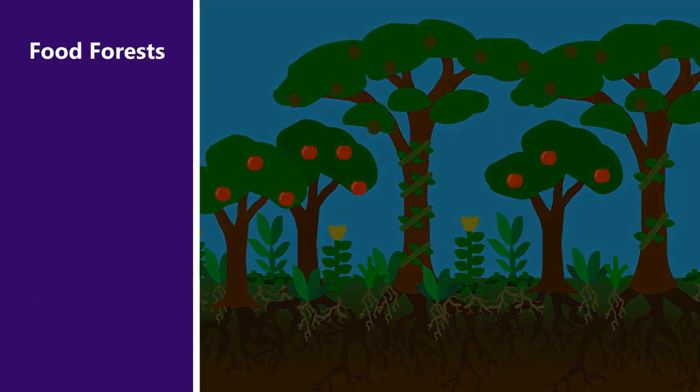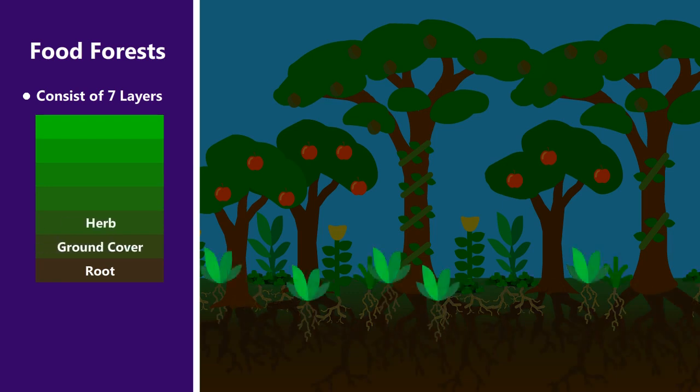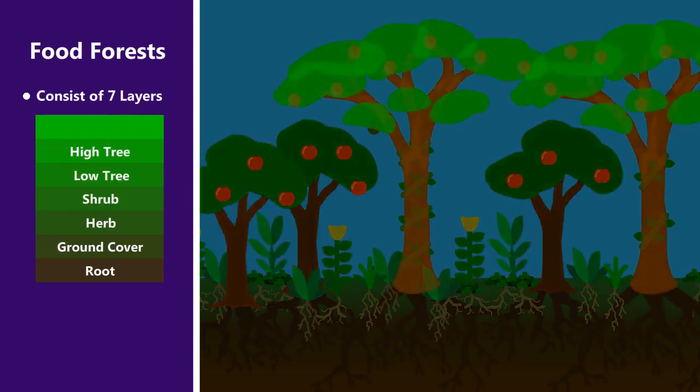Food forests are often thought of as comprising seven layers: the root layer, the ground cover layer, the herb layer, the shrub layer, the low tree layer, the high tree layer, and the vine layer.